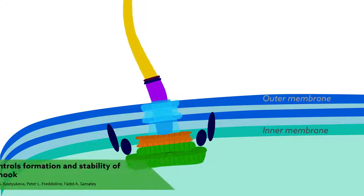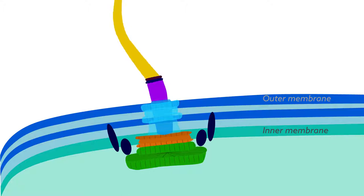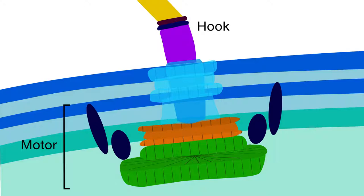The bacterial flagellum is one of the most amazing structures in biology. The whip-like appendage rotates as many as 300 times per second, allowing bacteria to swim around. That speed is thanks to a powerful internal motor and a strong hook that acts as a universal joint and transmits torque.